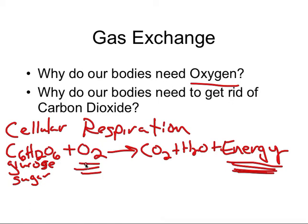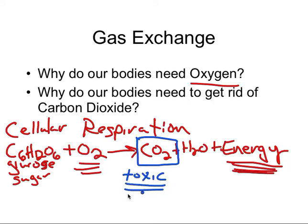Why do our bodies need to get rid of carbon dioxide? We need oxygen to make energy, but one of the byproducts besides energy is carbon dioxide. If we have too much carbon dioxide in our body it becomes toxic, which means we could die from it. So we need oxygen to make energy, and we need to get rid of carbon dioxide because it can be toxic.